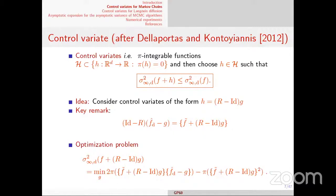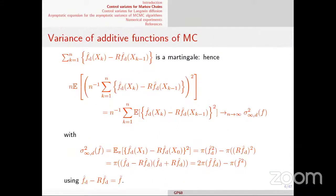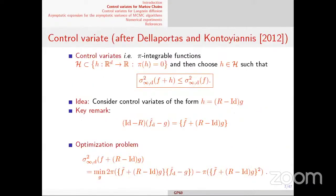Starting from this, if you want to compute the asymptotic variance in the CLT, you need to compute the Poisson equation. But there is a very easy way: this structure provides an explicit formula for the Poisson solution of f+h. If you take h = (R-I)g, the Poisson solution for f+h is f_hat minus g. This is easy to see because (I-R) f_hat = f_tilde, and by definition (I-R)(-g) = (R-I)g.